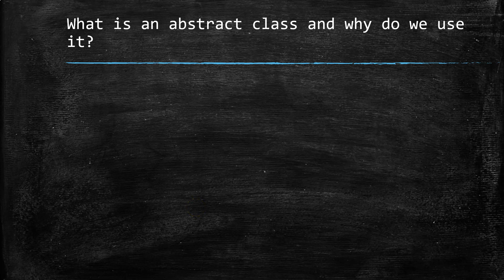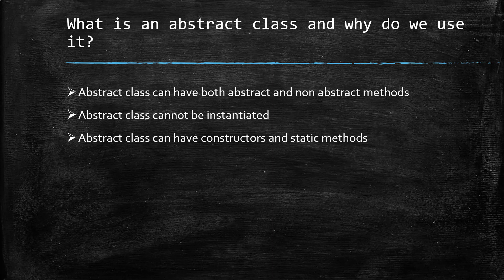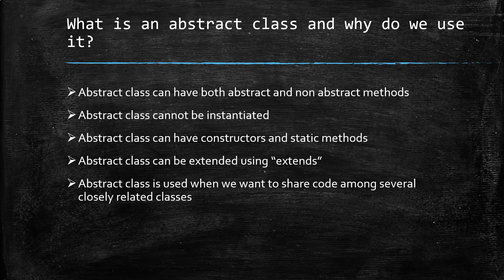Abstract class is another topic that comes up frequently in automation interviews. An abstract class is a form of abstraction in Java, but it doesn't provide full abstraction because it can have both abstract and non-abstract methods. Like an interface, it cannot be instantiated. An abstract class can have constructors and static methods. When implementing an interface you use the keyword 'implements,' but when extending an abstract class you use 'extends.'